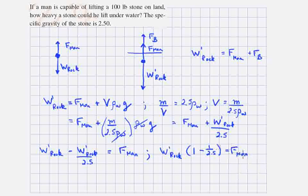Now I can solve for W prime rock. W prime rock equals F man divided by (1 minus 1 over 2.5).